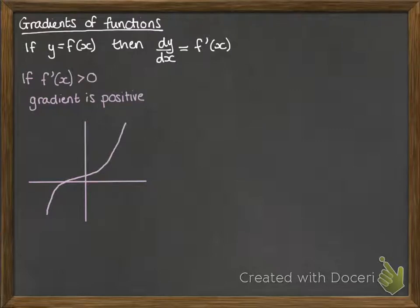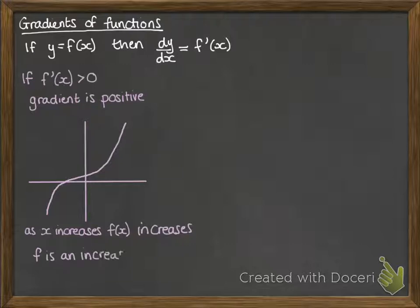If you think about any point on that curve, we will have a tangent to the curve that has a positive gradient. This means that as x increases, f(x) increases, and so we refer to this as an increasing function. We can use this result that if f'(x) > 0, then f is an increasing function.